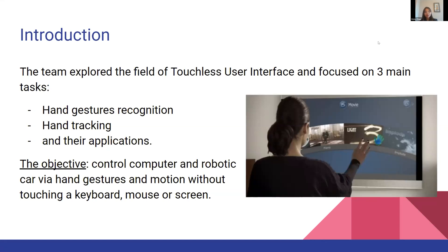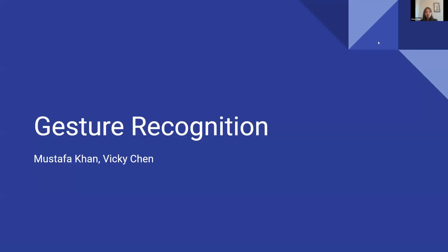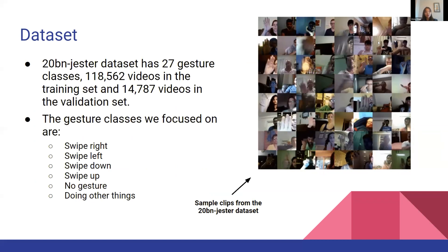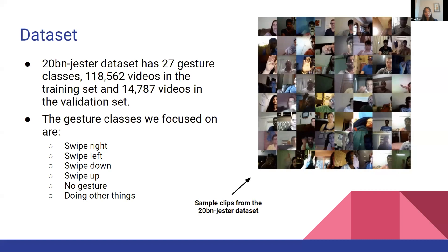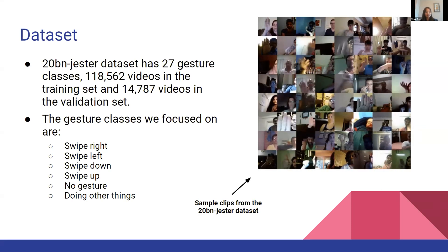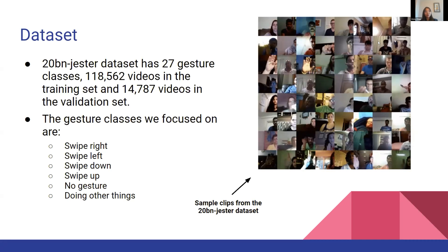By implementing different neural networks, the team successfully created a touchless interface and explored the different dynamics of human-computer interaction. For today's presentation, let's start with gesture recognition. The dataset we use is the Jester gesture dataset — a large collection of labeled video clips that show humans performing predefined hand gestures in front of a laptop. There are 118,562 videos in the training set and 14,787 videos in the validation set.